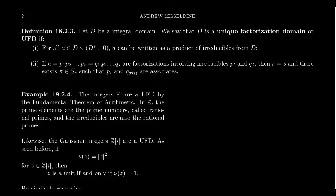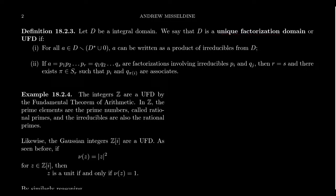Recall that an integral domain is a commutative ring with unity with the property that there are no proper divisors of zero. That last axiom could also be rewritten as the cancellation axiom. Integral domains are very important in the theory of commutative algebra — that is, the theory of commutative rings with unity. In particular, integral domains are the background for which we want to talk about factorization. In this video, we're going to define the notion of a unique factorization domain, often called UFD for short.